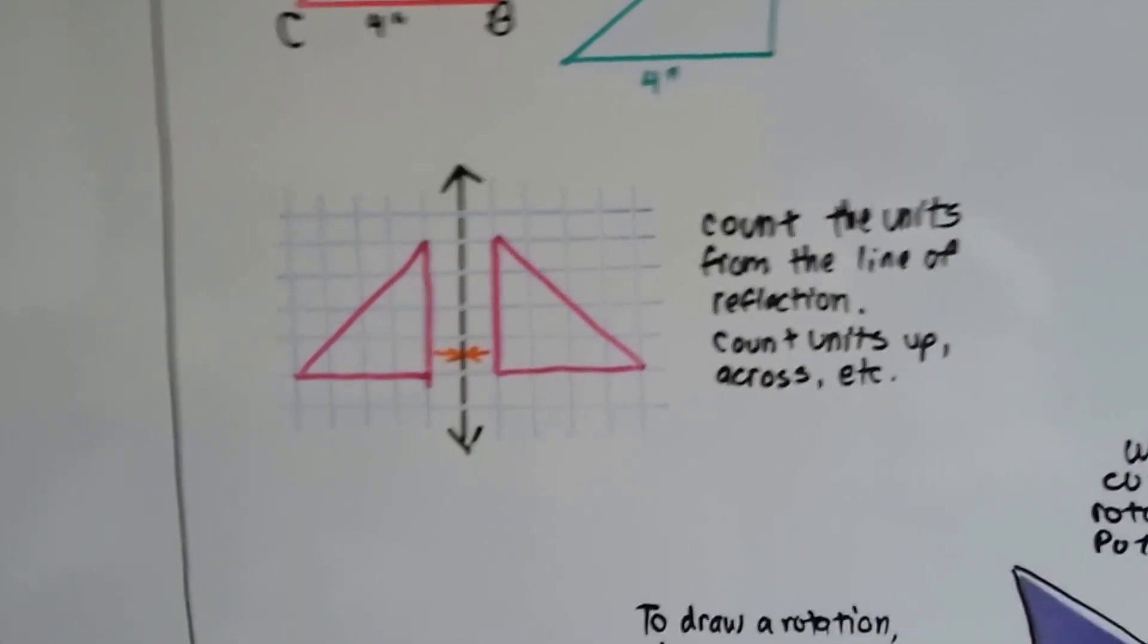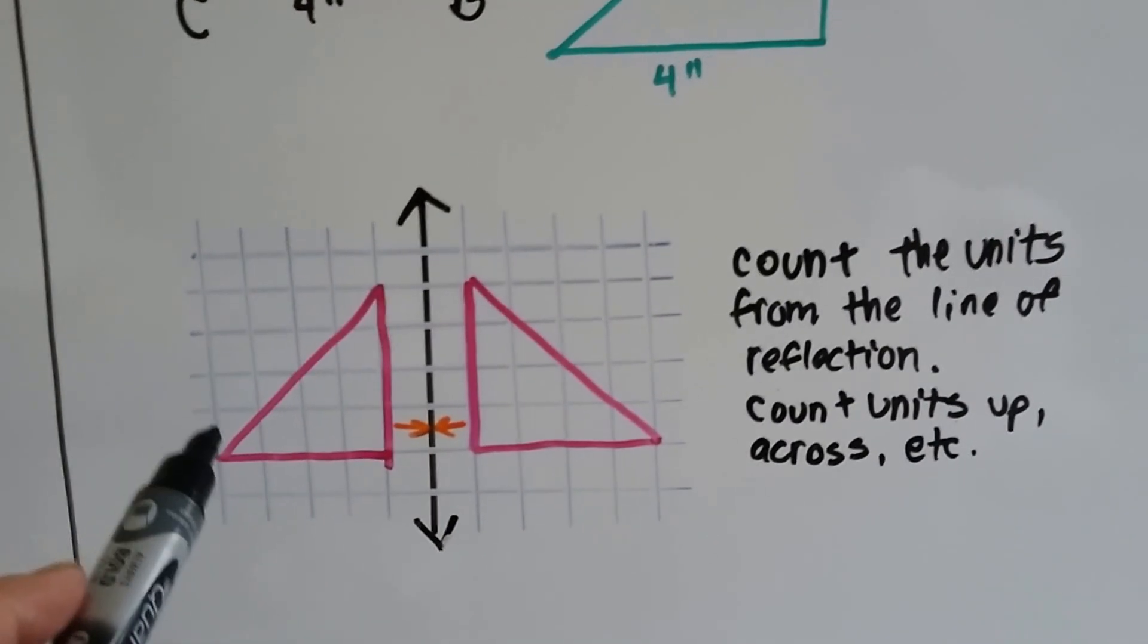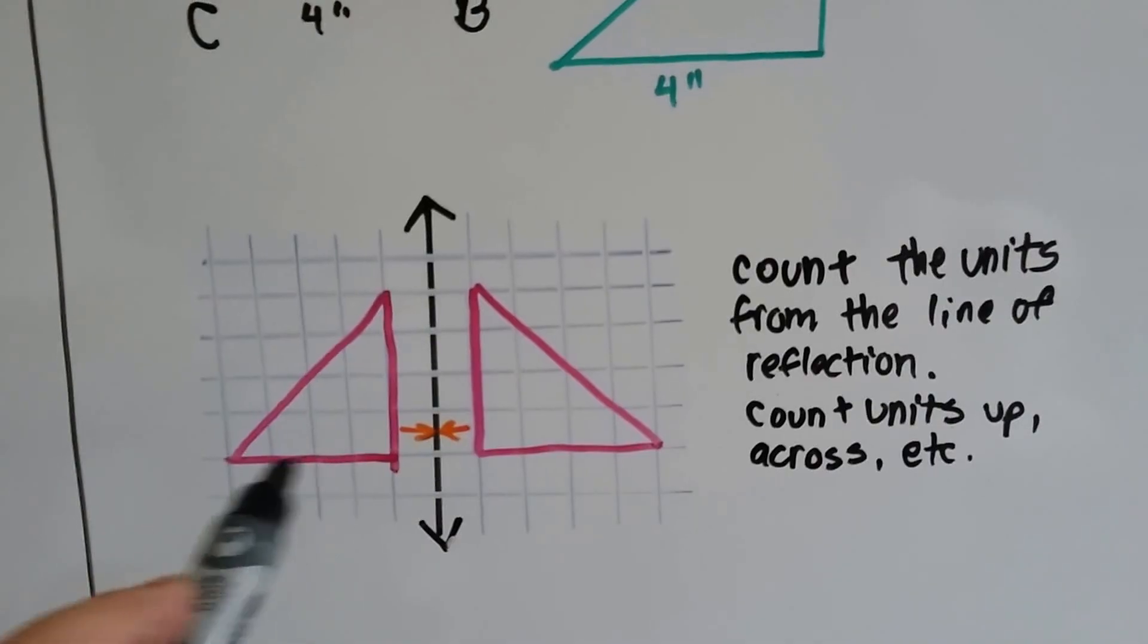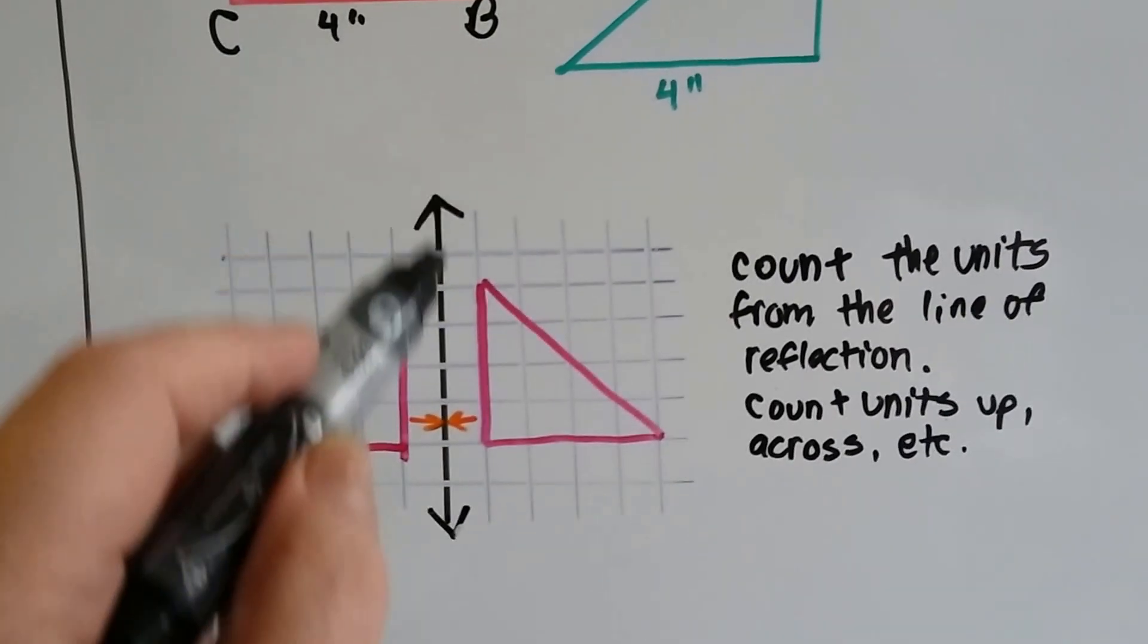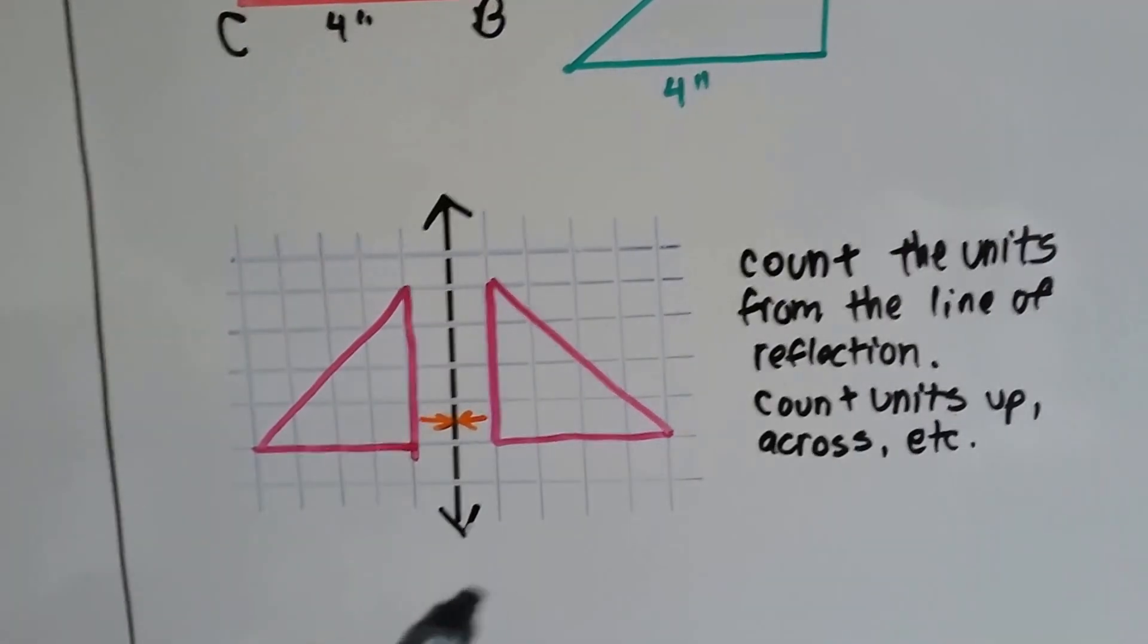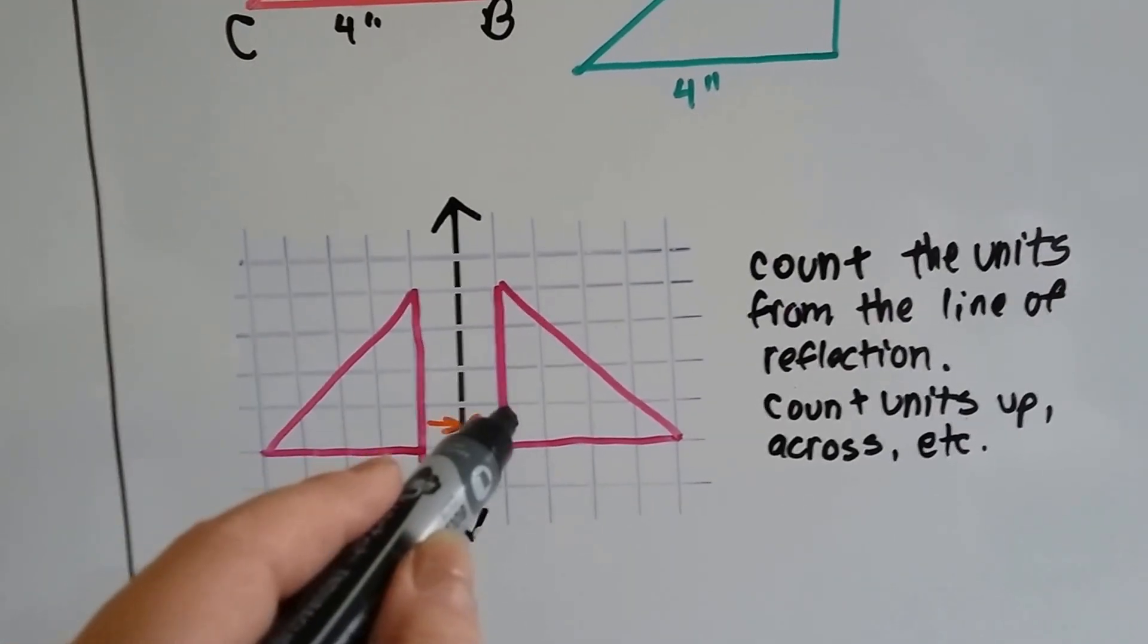We could also count the units from the line of reflection, and then count the units up and across and sideways. So if we were on a grid, like a coordinate plane or graph paper, and this was our line of reflection, this black arrow, we could say, okay, it's 1 unit away, so we make it 1 unit away.